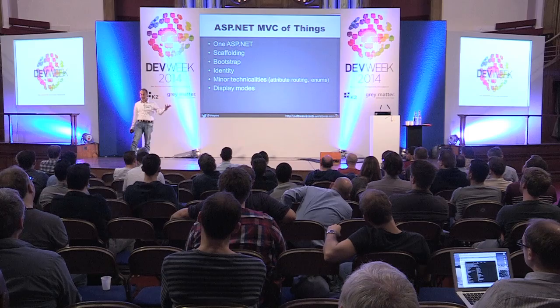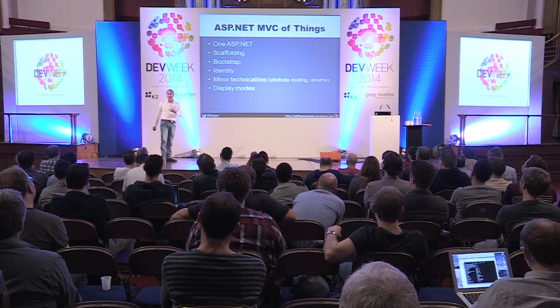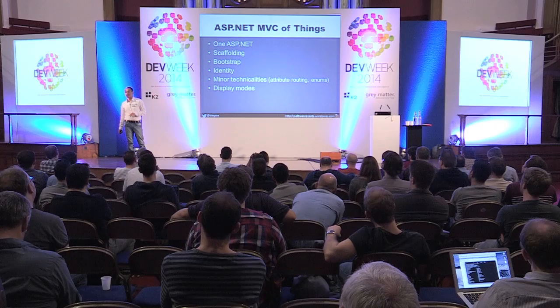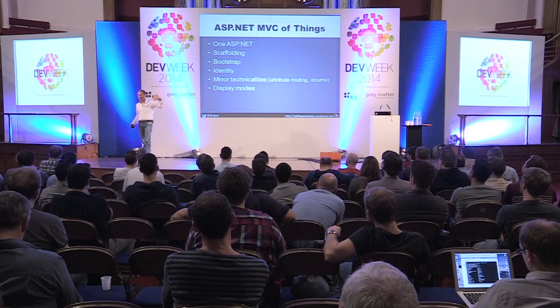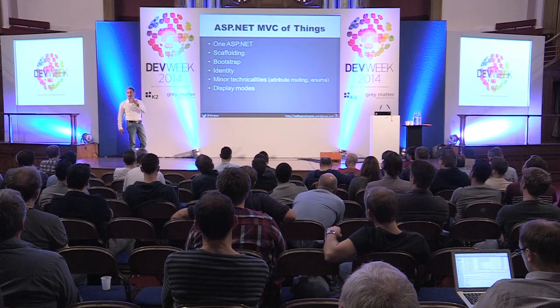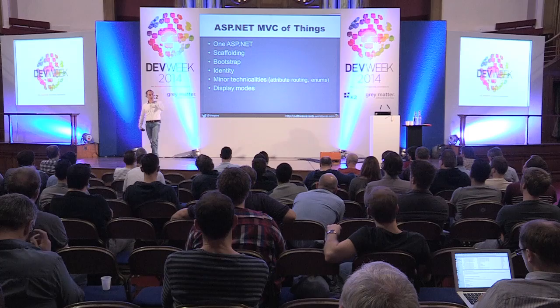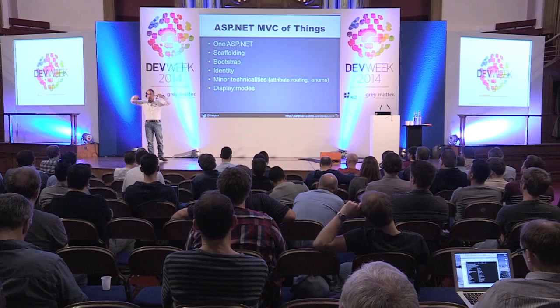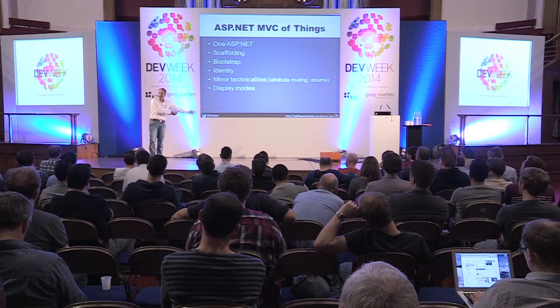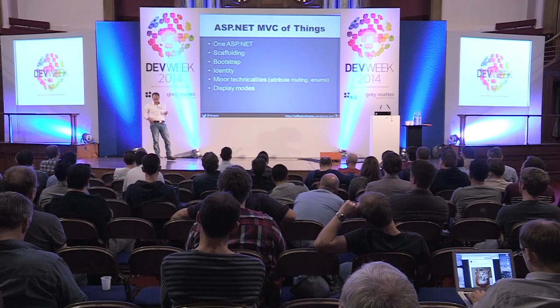The ASP.NET of things — where is the real value from the perspective of MVC5? One ASP.NET means that the future seems to indicate having just one ASP.NET platform, or at least that the perspective of developers writing applications should be writing one web app, with which internal framework — whether MVC, Web Forms, or Web API — being a second step, part of the scaffolding.